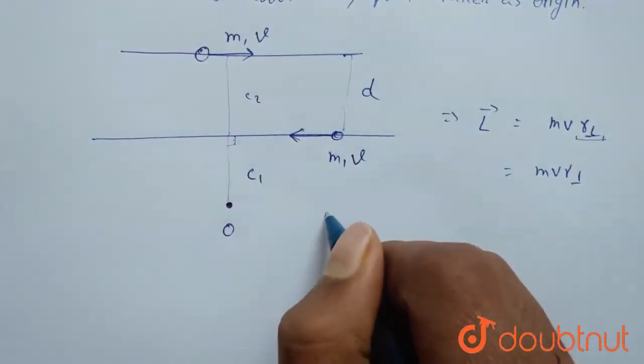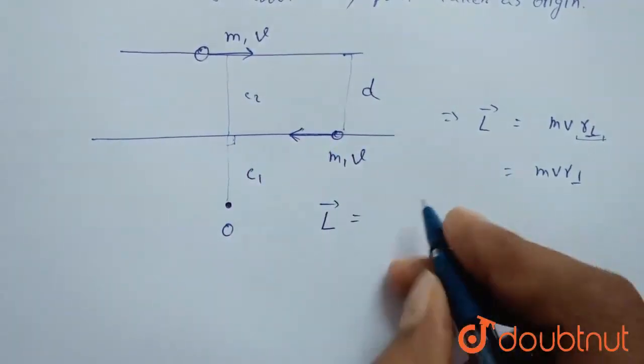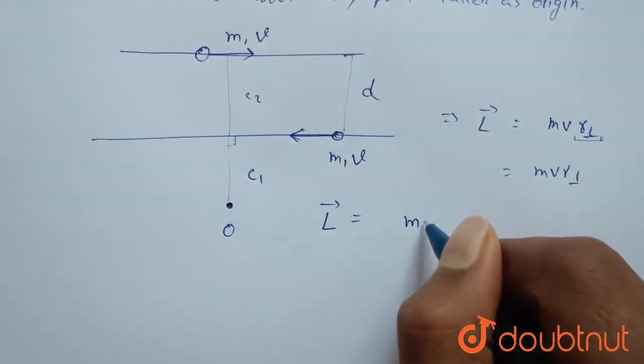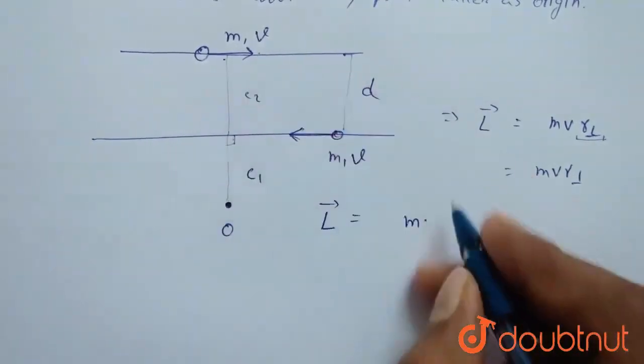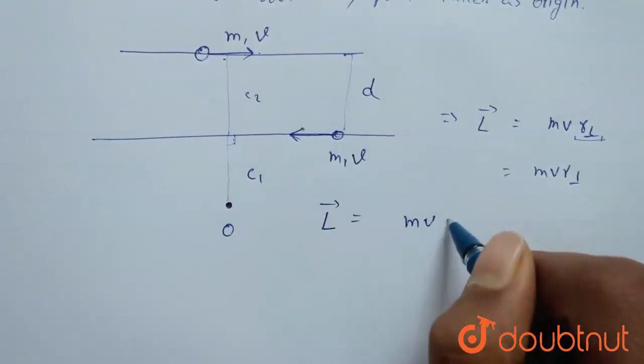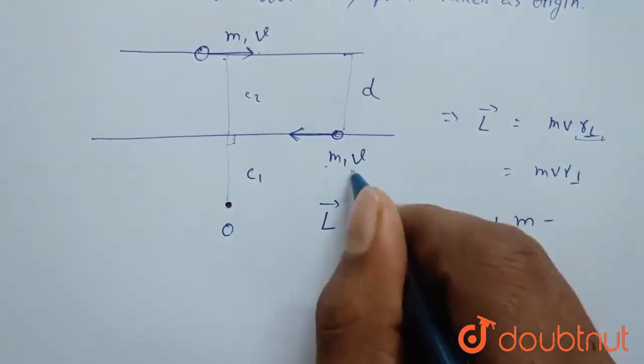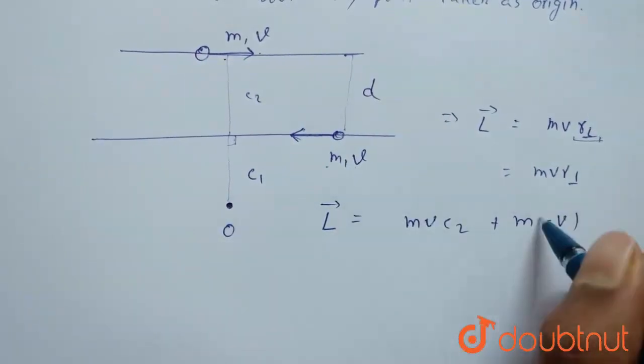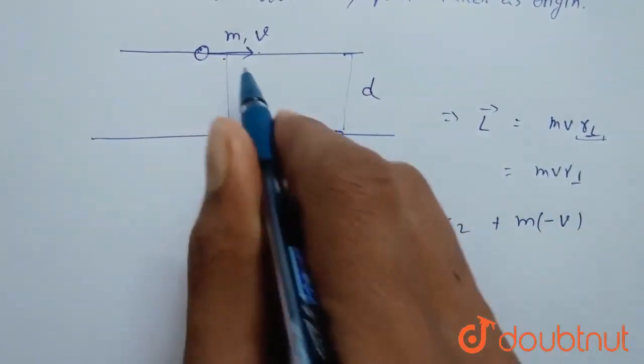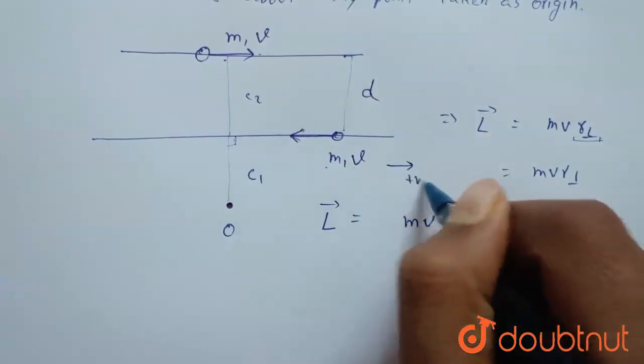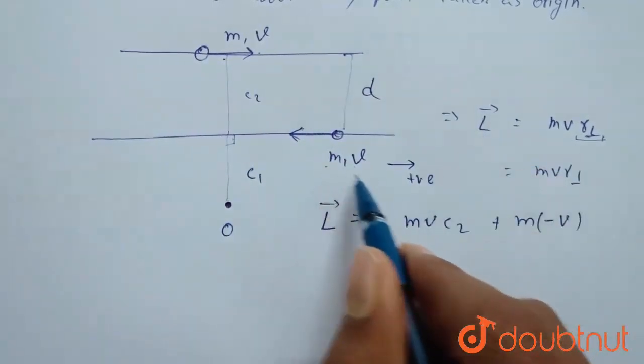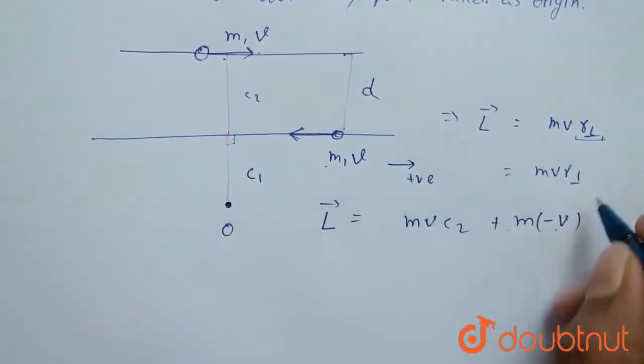Angular momentum of the system will be written as mv into c2 plus mv. v is minus here because its direction is opposite to that of this. I am assuming this direction is positive. So, I am writing m minus v into c1.